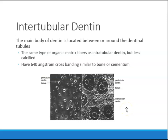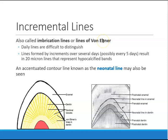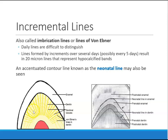Lines of von Ebner: when dentin gets formed, it forms in increments — in layers. These imbrication lines curve around the cusp of the tooth and are known as von Ebner lines. Each time dentin is deposited, it creates a line. Those lines are prominent every five days.